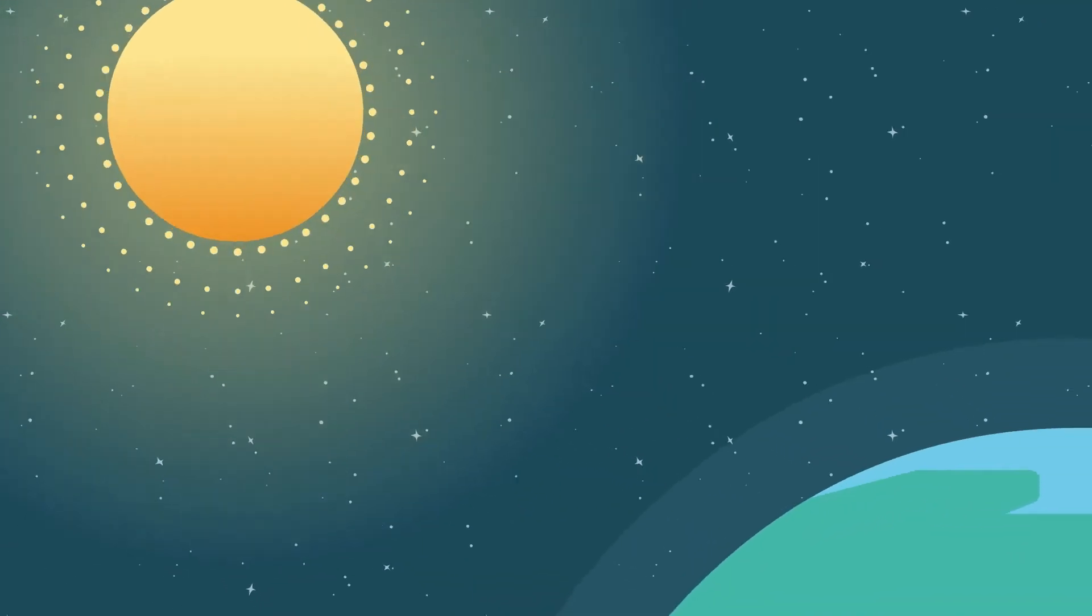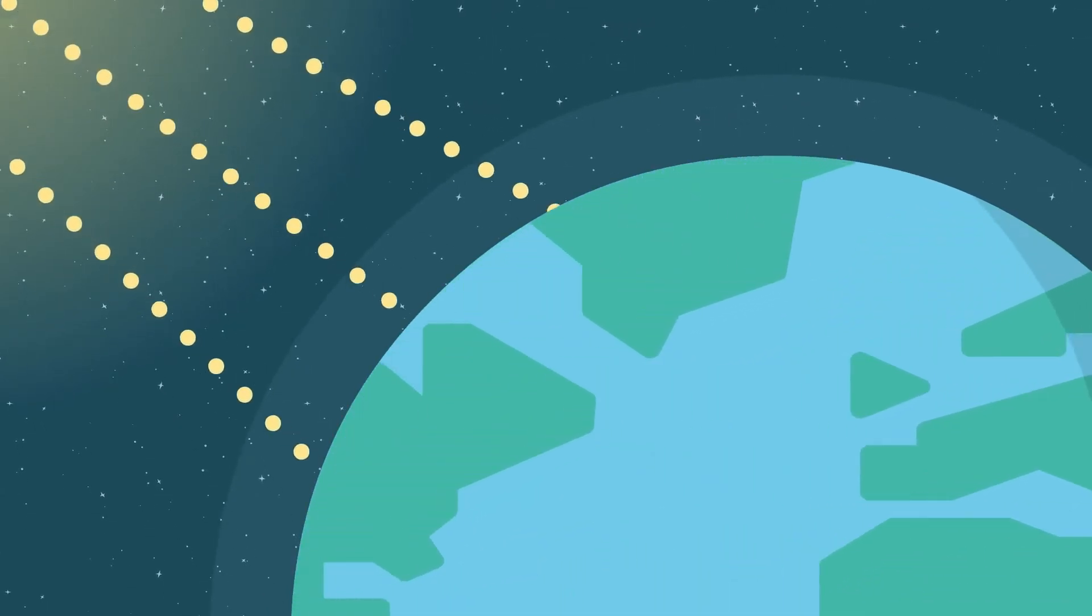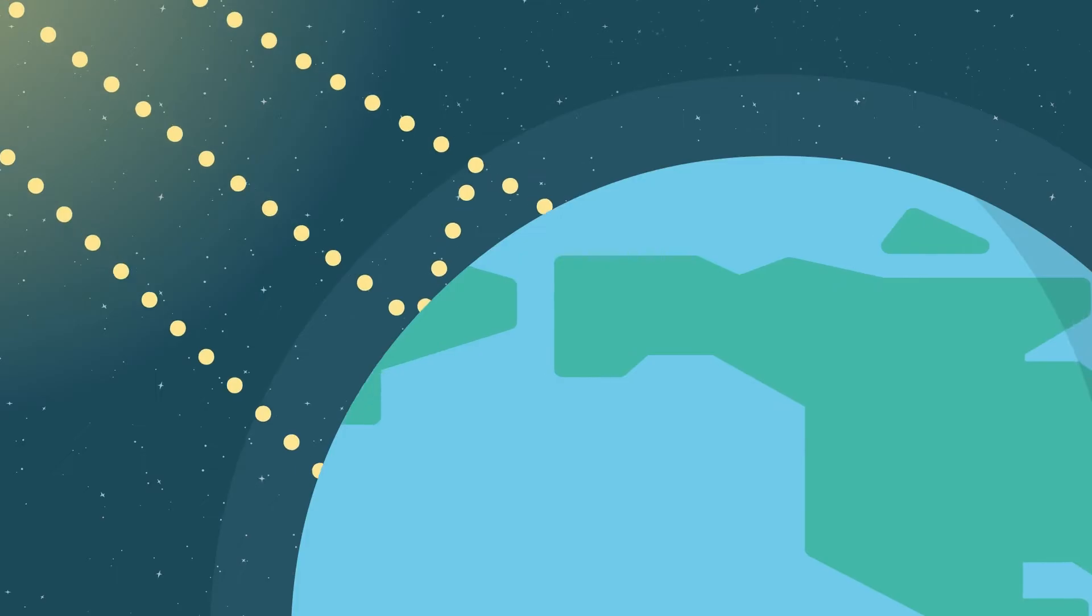The Sun provides the Earth with most of its energy. When sunlight reaches Earth, the Earth will absorb some of its energy and reflect the rest back into space.